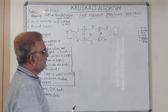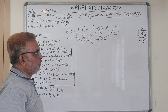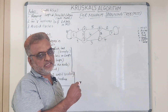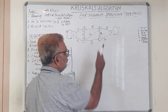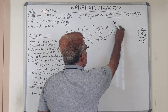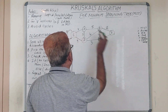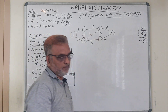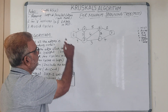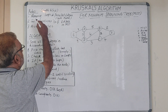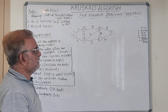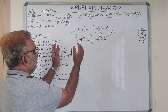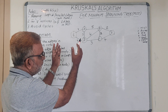Loops mean edges pointing to the same vertex. Even if their cost is less, we must remove them. We have two loops to remove. After removing loops and the parallel edges that cost more, we get the required cleaned graph from which we will derive the minimum spanning tree.